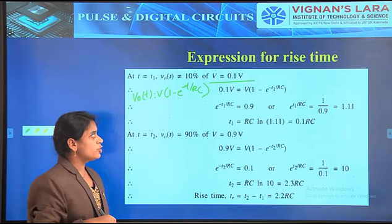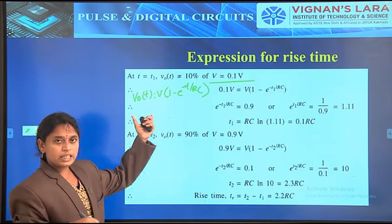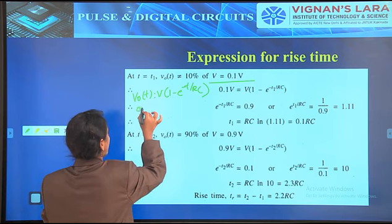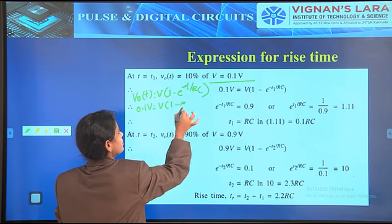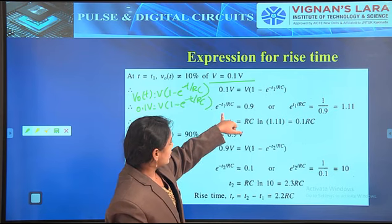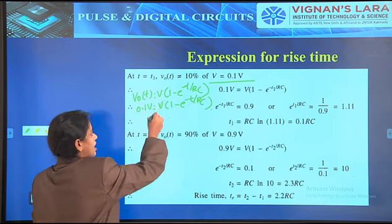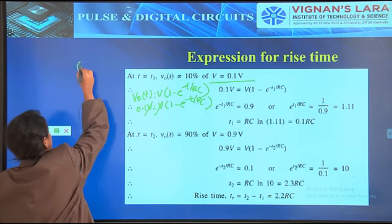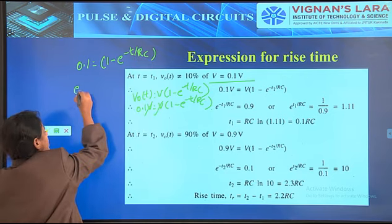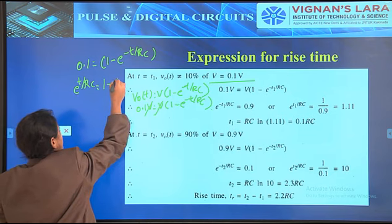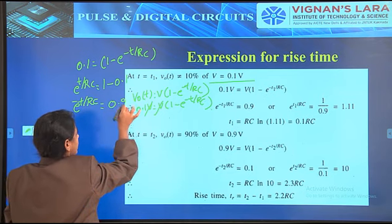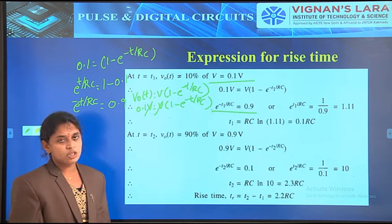Substituting V0 of T at 10 percent level as 0.1V into V into 1 minus e power minus T by RC, we cancel V and write 0.1 equals 1 minus e power minus T by RC. Then e power minus T by RC equals 1 minus 0.1, that is 0.9. So e power minus T1 by RC equals 0.9.